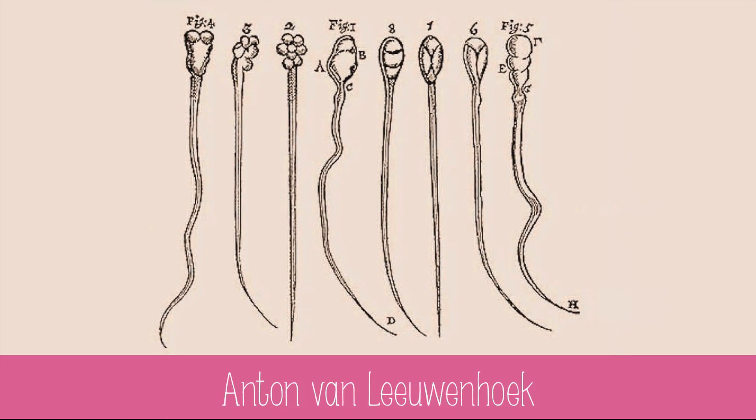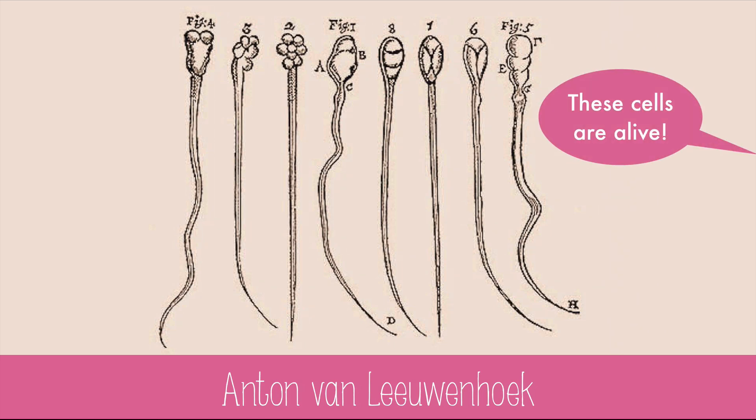Anton van Leeuwenhoek was the first scientist to realize that cells were actually living things. He looked at pond water, and perhaps more infamously, different types of sperm. Just don't think about how he got it.